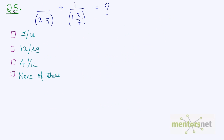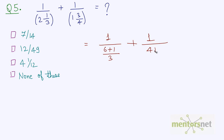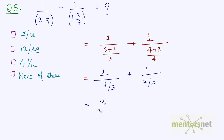Let us end this video by solving question number 5, which has mixed fractions in the denominator. First, solve the mixed fractions: 2 and 1/3 converts to (3×2+1)/3 = 7/3, and 1 and 3/4 converts to (4×1+3)/4 = 7/4. This gives 1 divided by (7/3 + 4/7)... bringing denominators up: 3/7 plus 4/7 equals 7/7, which equals 1. However, 1 does not appear as an option here.